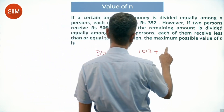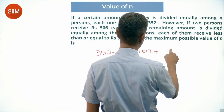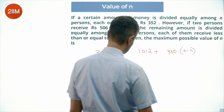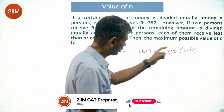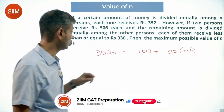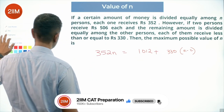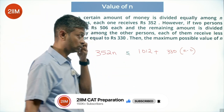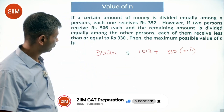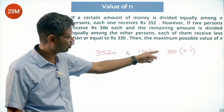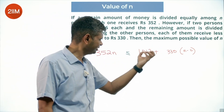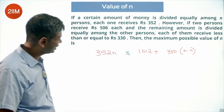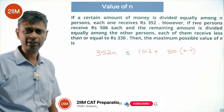The remaining amount is divided equally among the other persons, and each of them receives less than or equal to 330. So 330 into (n minus 2) is less than or equal to the remaining amount. We frame this inequality to find the maximum possible value of n.